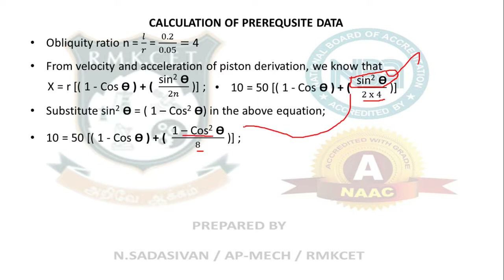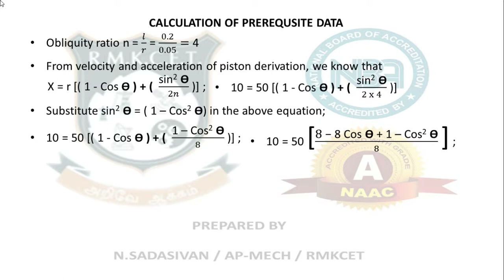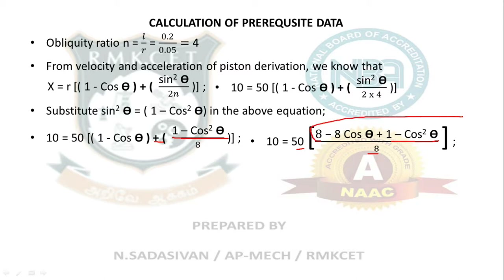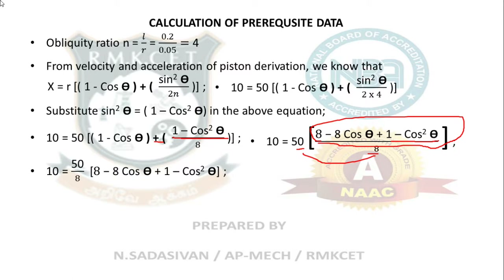Take LCM within the bracket using 8 as common factor. Expanding: 1 times 8 gives 8, minus 8 cos θ, plus 1 minus cos²θ. So: 10 equals 50 divided by 8 times (8 minus 8 cos θ plus 1 minus cos²θ). Cross-multiplying: 10 times 8 divided by 50 equals the bracket expression. Since 8 plus 1 equals 9, the equation becomes: 1.6 equals (9 minus 8 cos θ minus cos²θ) divided by 8.